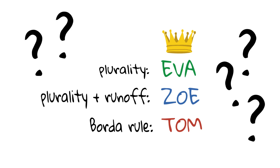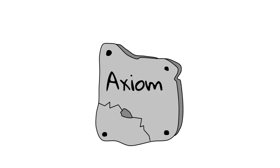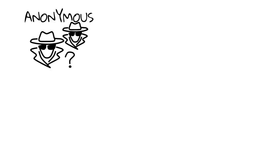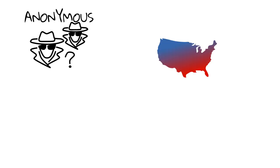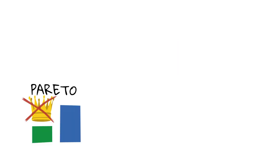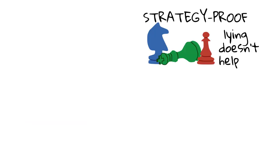To argue about the advantages and flaws of different voting rules, social choice theory uses axioms. They describe properties that we want a fair voting rule to have. Anonymity: the identity of voters should not affect the outcome. This axiom is clearly violated by the US elections — if you live in a swing state, your vote has a disproportionately large effect, but if you are a Democrat living in a traditionally Republican state, you might as well not cast your vote. The Pareto Principle: if all voters prefer candidate A over candidate B, B should not win. This sounds pretty reasonable.